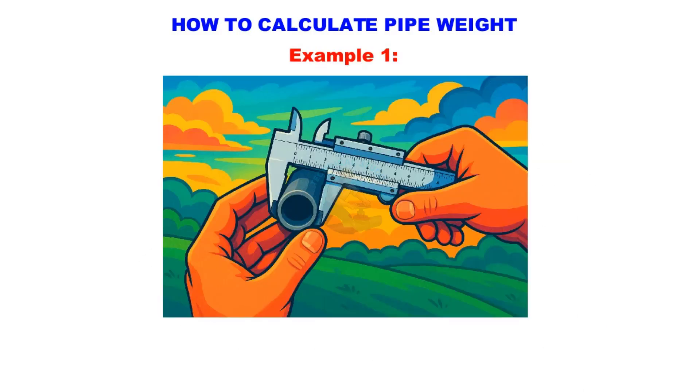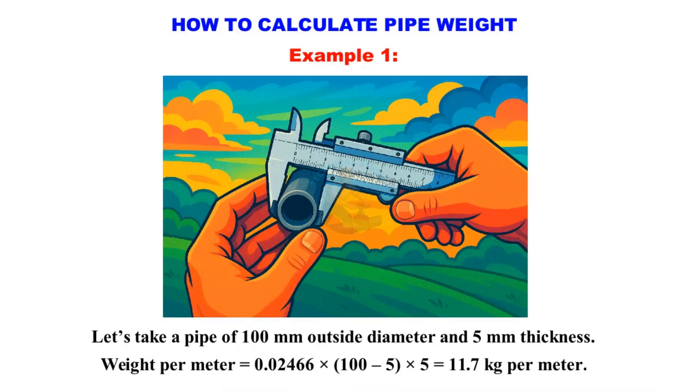Example 1. Let's take a pipe of 100 millimeters outside diameter and 5 millimeters thickness. Weight per meter equals 0.02466 times 100 minus 5 times 5 is equal to 11.7 kilogram per meter.